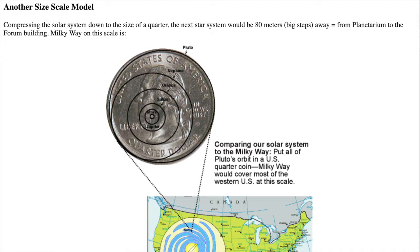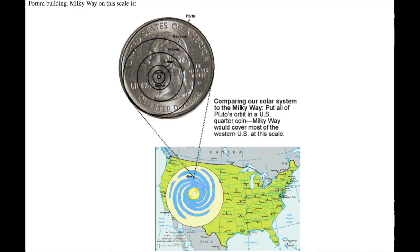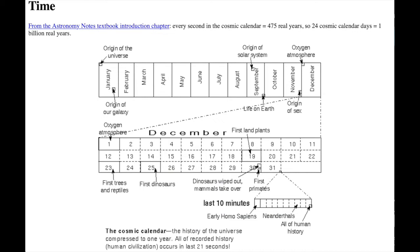Another scale model to memorize is the one where Pluto's orbit is shrunk down to the size of a quarter. The next star system, Alpha Centauri, would be 80 meters away, where a meter is about one big step. On the BC campus, that would be the distance between the center of the planetarium and the foreign language building. If our solar system is a quarter, then the Milky Way would cover most of the western U.S., stretching from Los Angeles to Pierre, South Dakota. Imagine how many planetary system quarters you could fit in the western U.S. — planetary systems are tiny in comparison to galaxies.